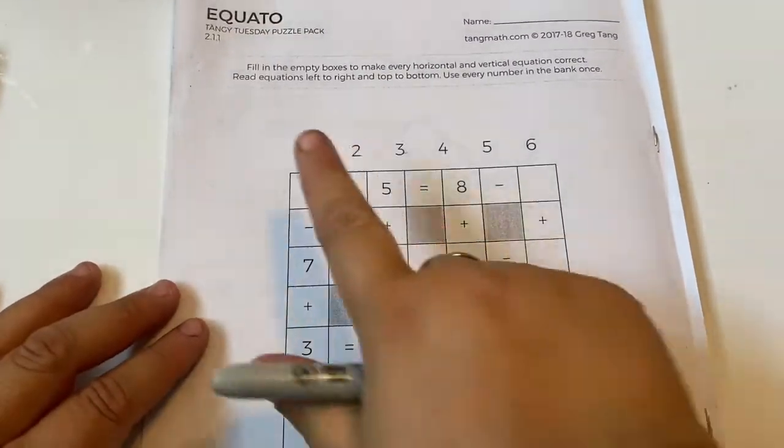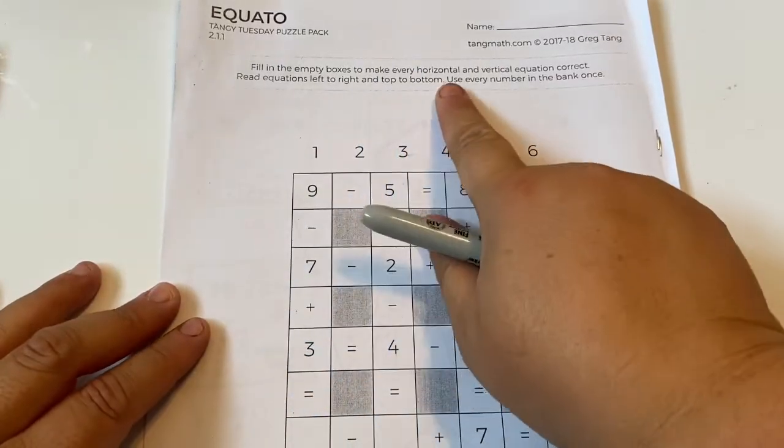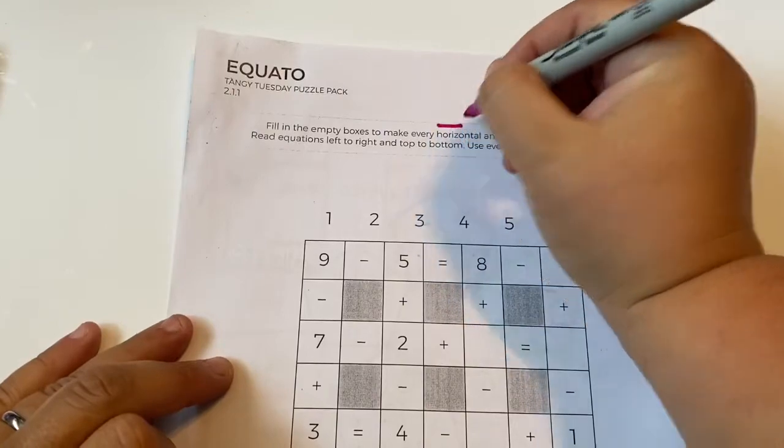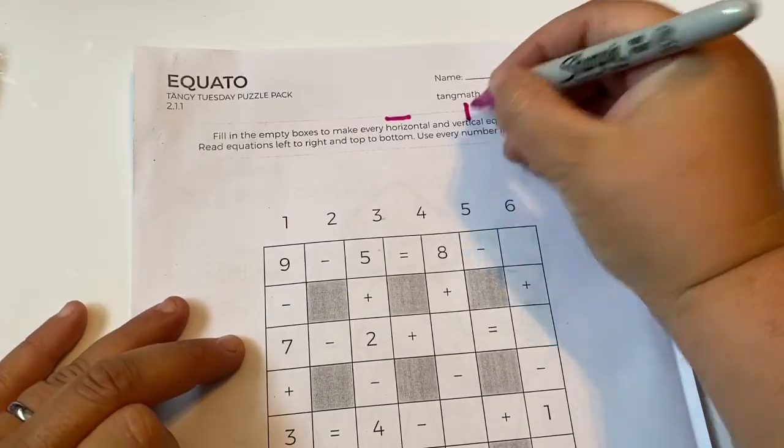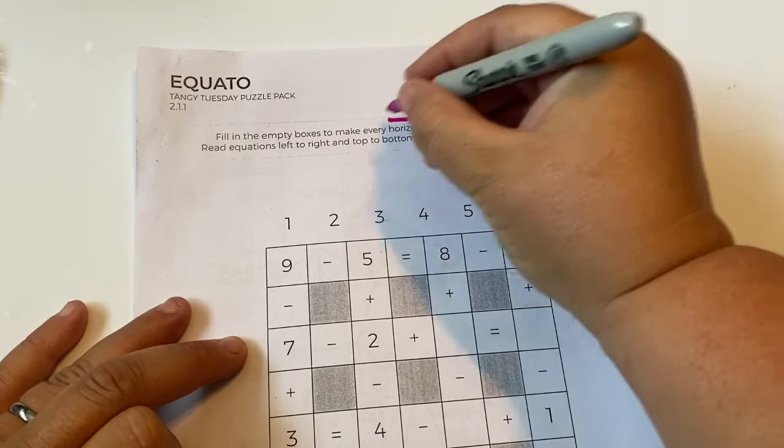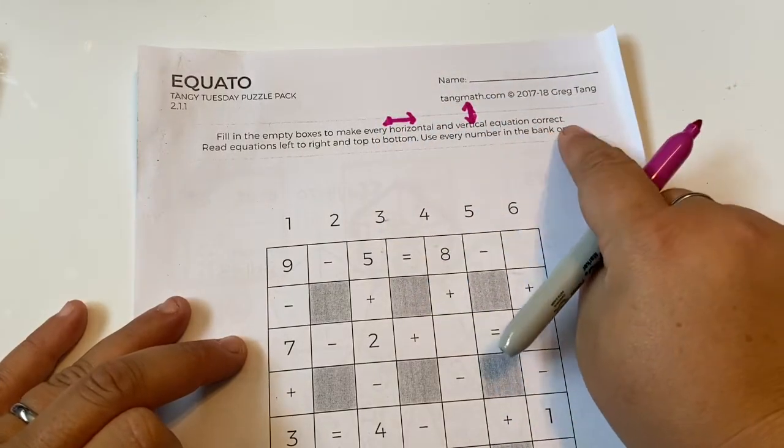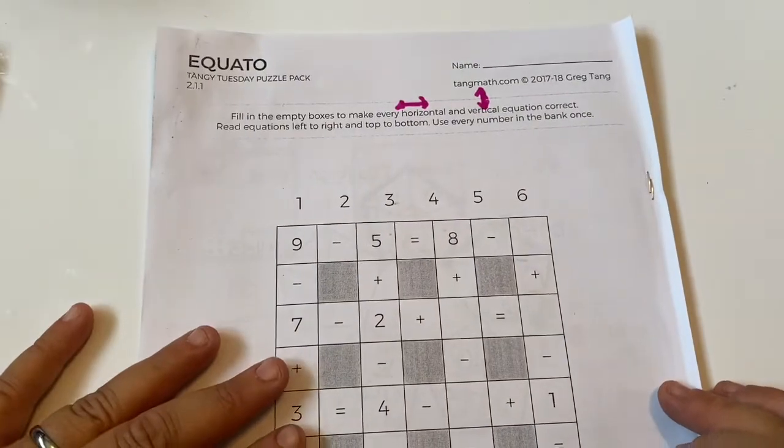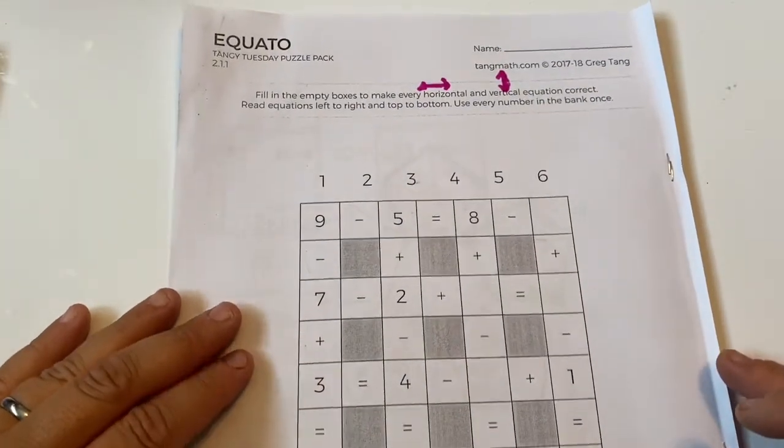The instructions say, fill in the empty boxes to make every horizontal, horizontal means side to side, and vertical, which means up and down, equation correct. Read equations left to right and top to bottom.